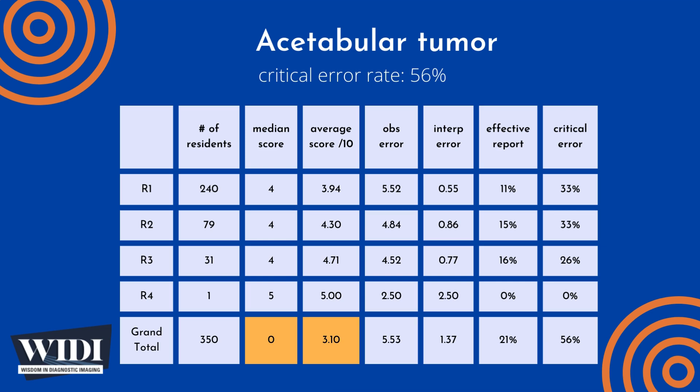Overall, the average number of points lost out of 10 due to observational deficiency was 5.53, while 1.37 points were lost due to interpretive errors on the part of the residents.